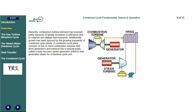Recently, combustion turbine plant demand has boomed, partly because of steady increases in efficiency due to material and design improvements. Additionally, growth has been spurred by the growing popularity of combined cycle plants. A combined cycle plant consists of one or more combustion turbines that drive generators and exhaust into a special boiler called a heat recovery steam generator, or HRSG, that generates steam for a Rankine cycle unit.